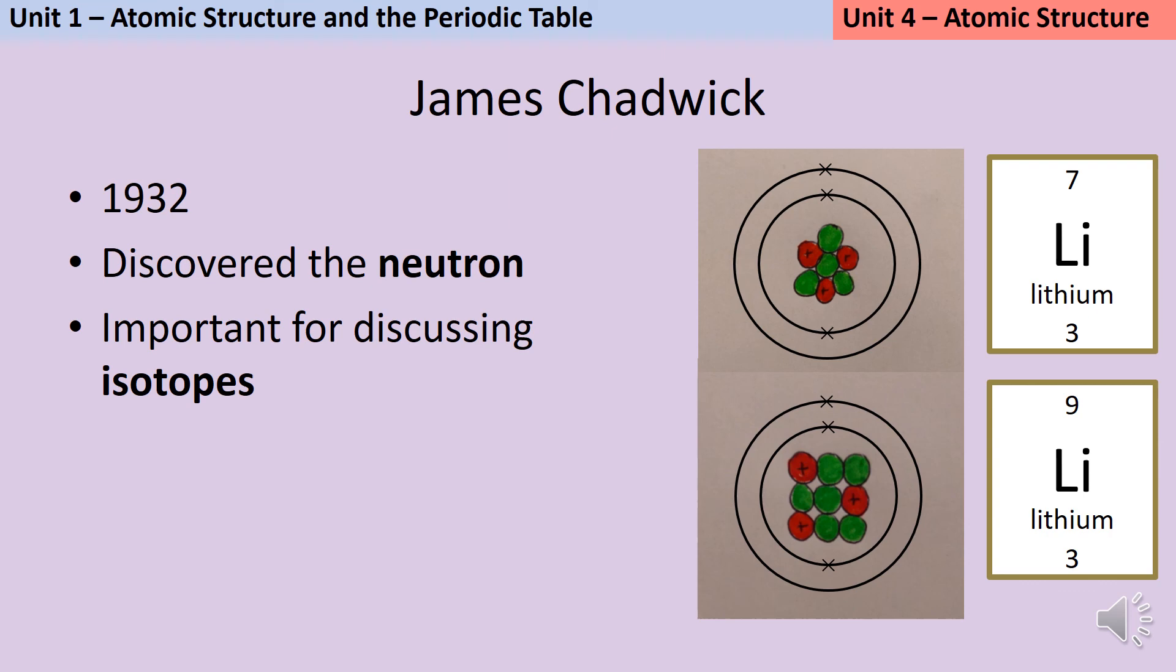If you look at this example, the top picture shows an isotope of lithium that has four neutrons, whereas the bottom picture shows an isotope that has six neutrons. If you've got a sample of lithium that contains both of these types of atoms, then when you try and weigh it, you're going to end up with a relative atomic mass that isn't a whole number because it takes into account both of those different isotopes.